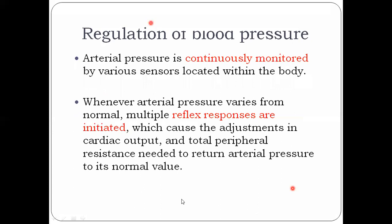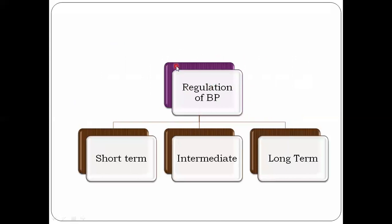How is blood pressure regulated? Blood pressure is being continuously monitored by various receptors or sensors located in our body. When these receptors sense a change in blood pressure, they activate several reflexes that cause an immediate response, restoring the fluctuated blood pressure to the normal value. So we have short-term regulation, intermediate-term regulation, and long-term regulation.